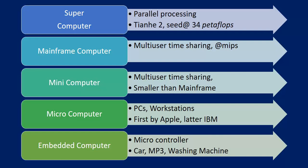Then micro-computers, which we all use — workstations first introduced by Apple and later by IBM. And the last one is the embedded computer, like micro-controllers in car control systems, MP3 systems, washing machines — all these things are controlled by some micro-controller. This is also a kind of computer, known as an embedded computer.